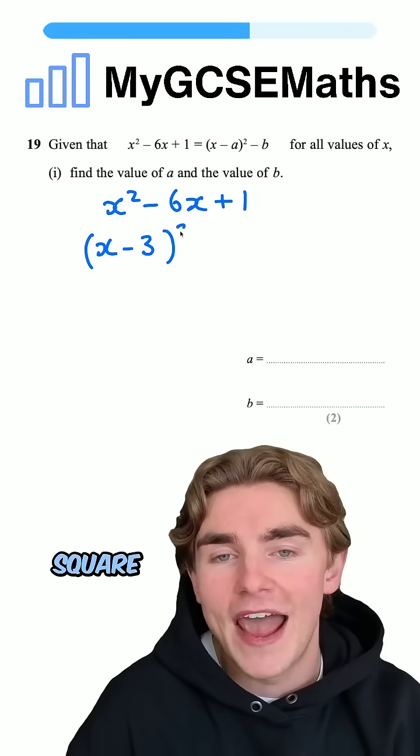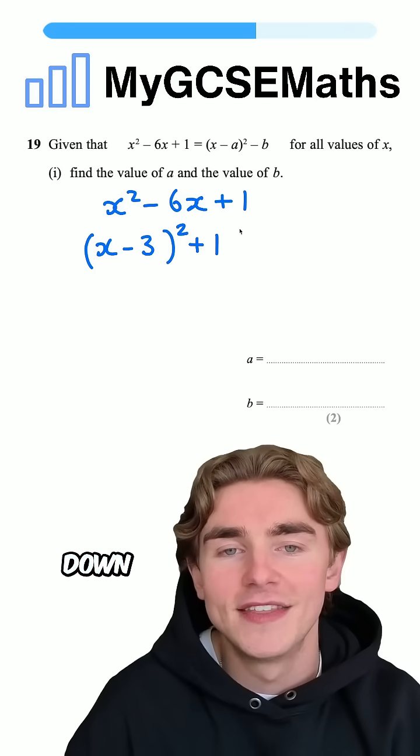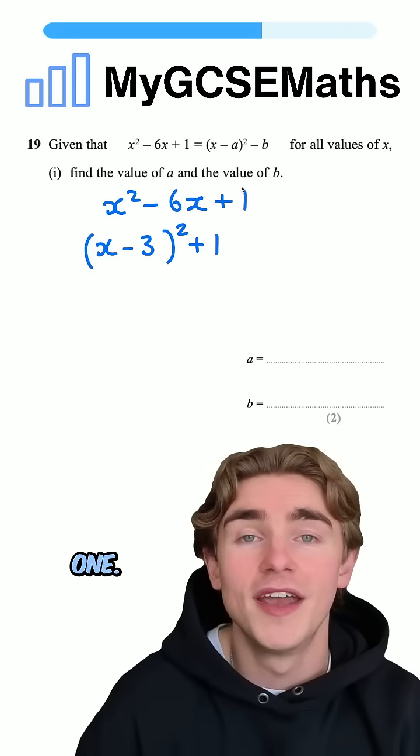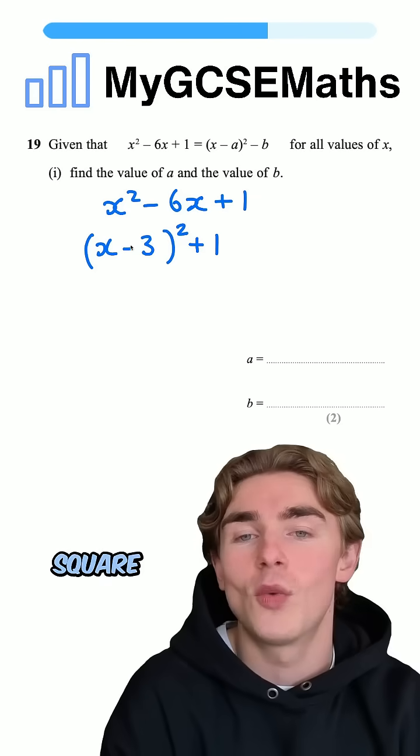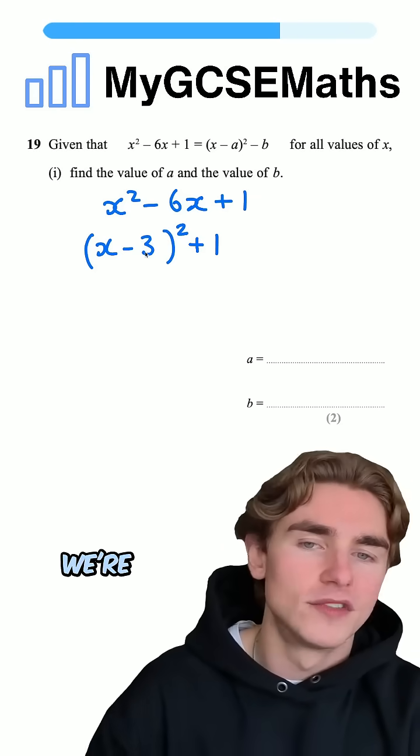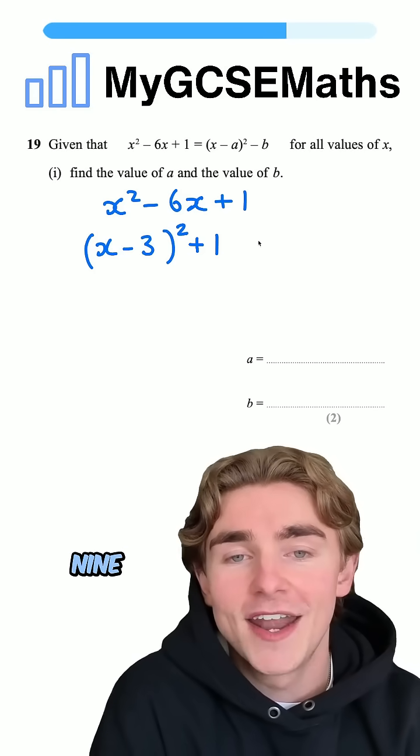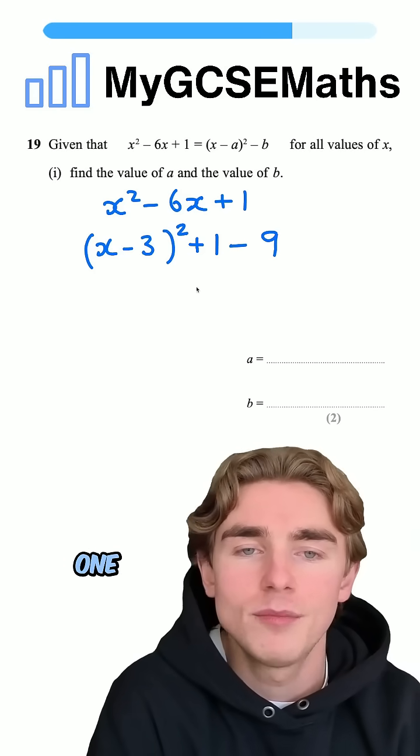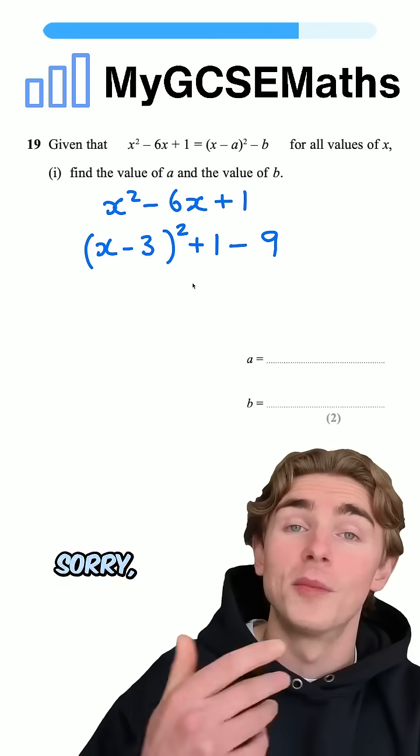Next step, we're going to square our bracket, and we're going to copy down this number on the end, the plus 1. Final step here, we're going to square the number inside of the brackets and take it away. So, here, we're going to square the 3, we're going to get 9, and we're going to subtract that. We're going to have 1 plus 9 on the end there. Sorry, 1 minus 9.